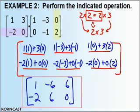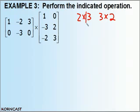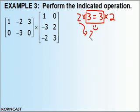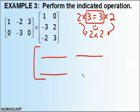Last example. I'll check my dimensions: this is a 2 by 3, and this one is a 3 by 2. I check my columns and make sure they equal my rows — they do, so that makes me happy. That tells me I'm going to get a 2 by 2 matrix. I'll draw myself a nice big 2 by 2 matrix with 2 rows and 2 columns to give myself some room.